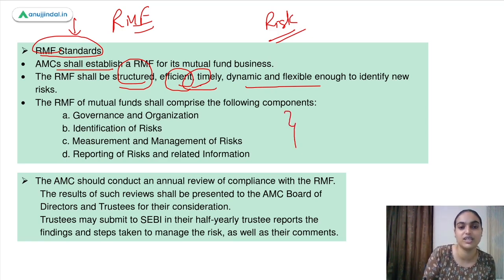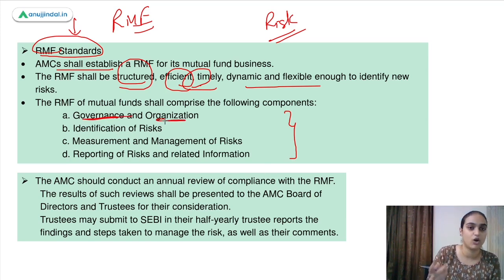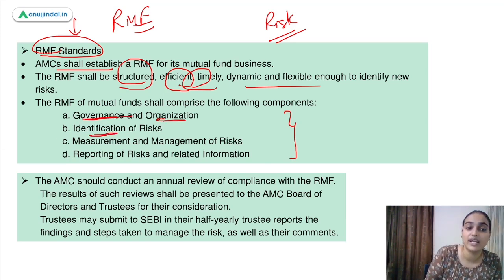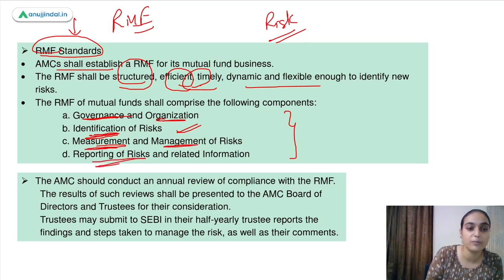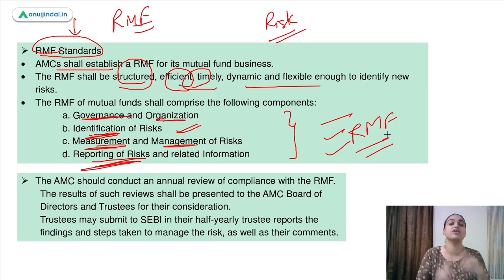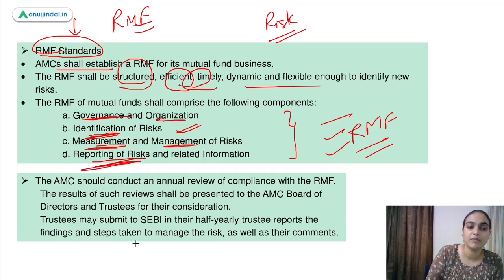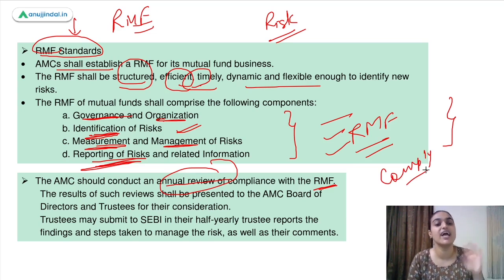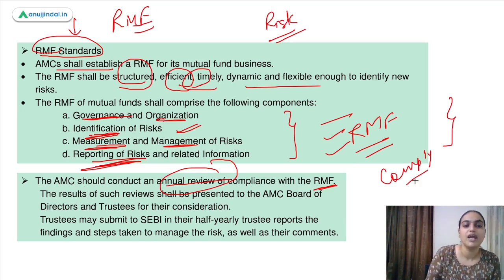The risk management framework should comprise four major components. First, governance and organization — appointing risk officers and dealing with risks. Second, identification of risks — the steps you will take to identify risks. Third, measurement and management of risks. Fourth, reporting of risks and related information. All these components should be present in your risk management framework. The asset management company also needs to conduct an annual review of compliance with the RMF, and the results should be presented to the AMC board of directors and trustees for their consideration.